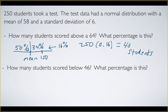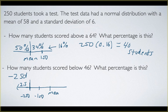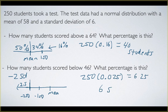How many students scored below 46? Looking at 46: 58 minus 46 equals 12, and 12 divided by 6 means we are negative 2 standard deviations from the mean. Everything to the left of minus two standard deviations is 2.5% — that's 0.15% plus 2.35%. So we take 250 times 0.025, which equals 6.25. Rounding down, 6 students scored less than 46 on this test.